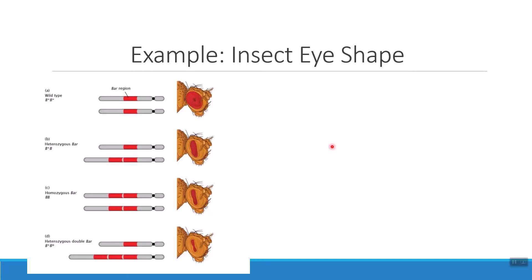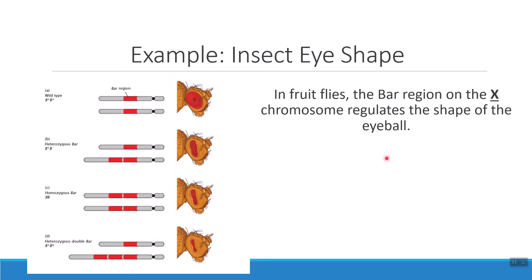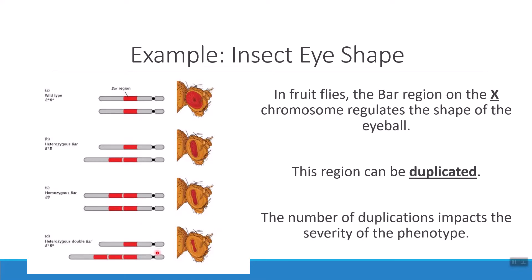If we look at fruit flies — Thomas Hunt Morgan's favorite — we can see a really good example of duplication. In fruit flies, on the X chromosome, they have a gene called the bar region. The bar region contains the genetic information that dictates the shape of the fly's eyeball. This gene can be and sometimes is duplicated, so instead of having one copy of this bar region, a fly could have two copies or even three copies. Notice that the more duplications we have, the more severely that eye shape is going to deviate from normal. An example of duplication is the changing shape of the eyeball in these flies.